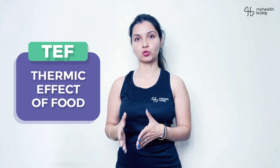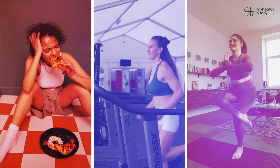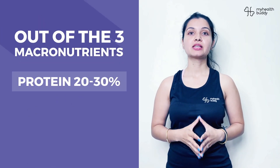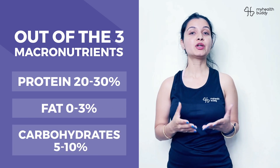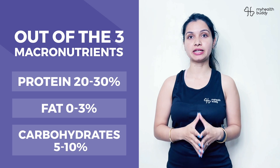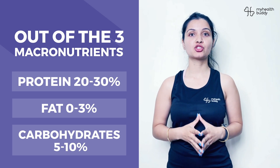Next comes the TEF value, i.e. thermic effect of food. Whatever food we eat requires energy to get digested. Out of the three macronutrients, protein requires the highest energy content — 20-30% — as compared to fats which is 0-3% and carbohydrates which is just 5-10%. Clearly, the TEF value for protein is the highest.